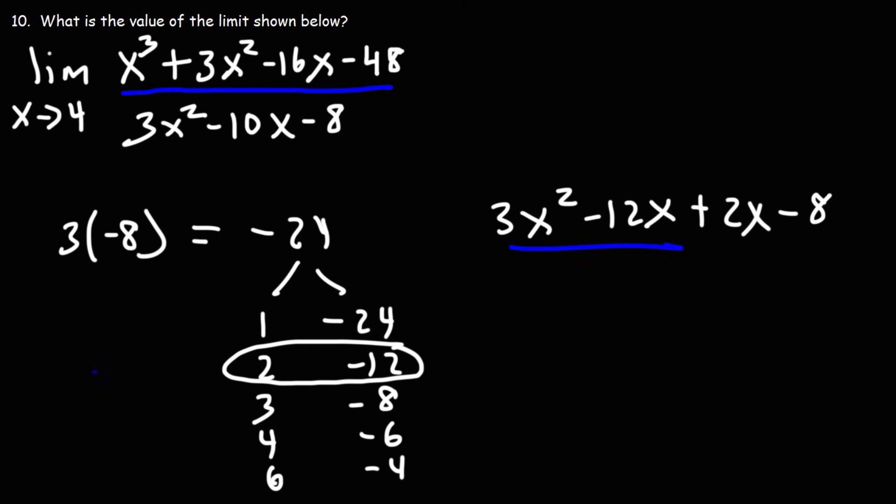So let's take out the GCF in the first two terms. That's going to be 3x. 3x squared divided by 3x is x. Negative 12x divided by 3x is negative 4. Now the GCF for the last two terms is positive 2. 2x divided by 2 is x. Negative 8 divided by 2 is negative 4.